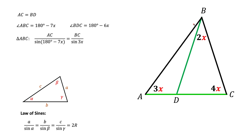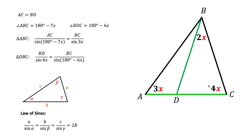For the smaller triangle DBC, we take side BD divided by the sine of the opposite angle 4x, and that equals side BC divided by the sine of the opposite angle D, which is 180 minus 6x.